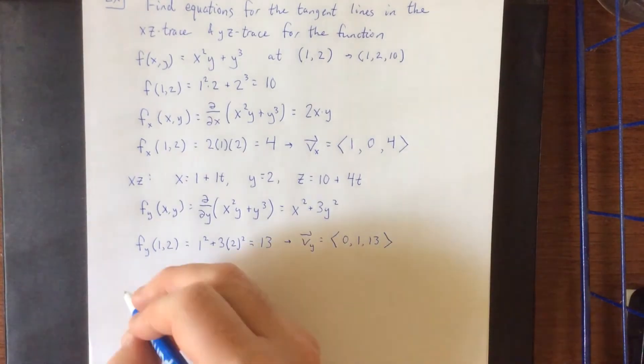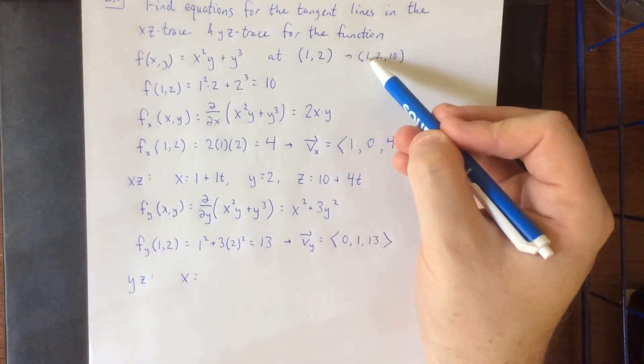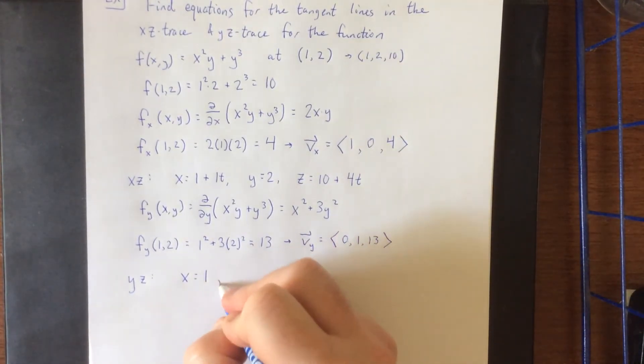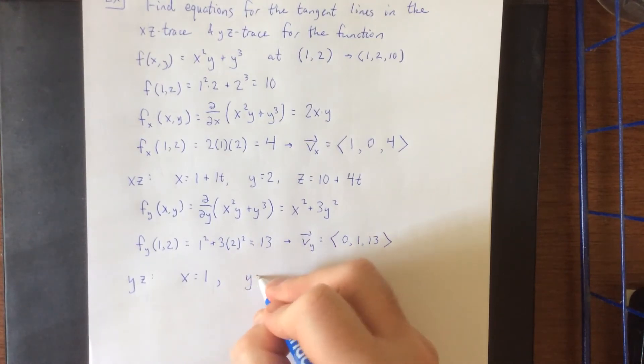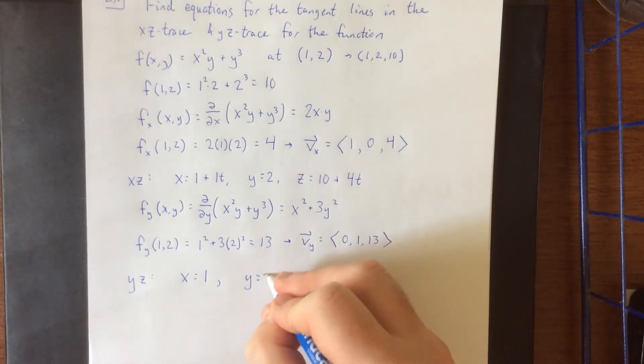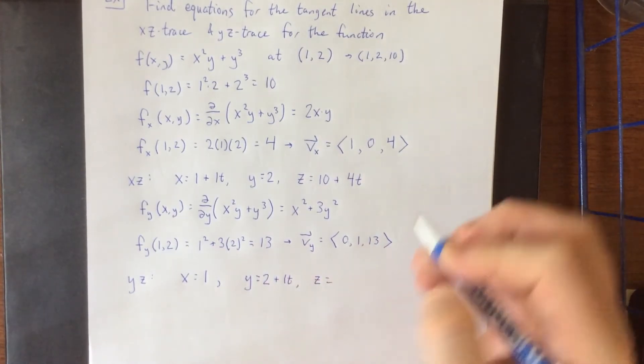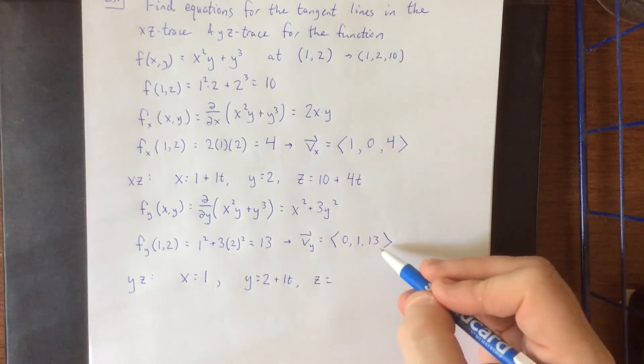Within the yz trace the equation of this tangent line is going to be the following: x equals 1 plus 0t indicating that we're holding x to be constant. Y would be equal to 2 plus 1t. And z would be 10 plus 13t.